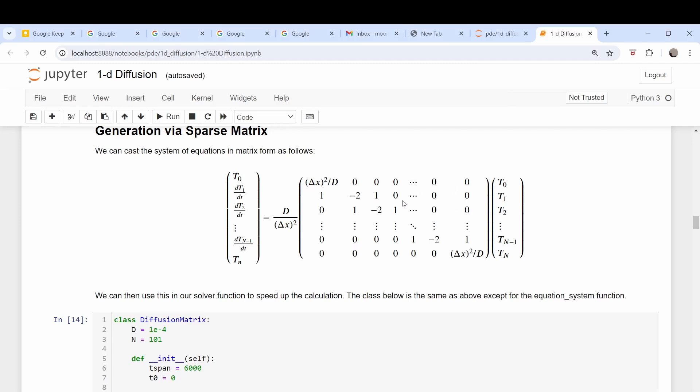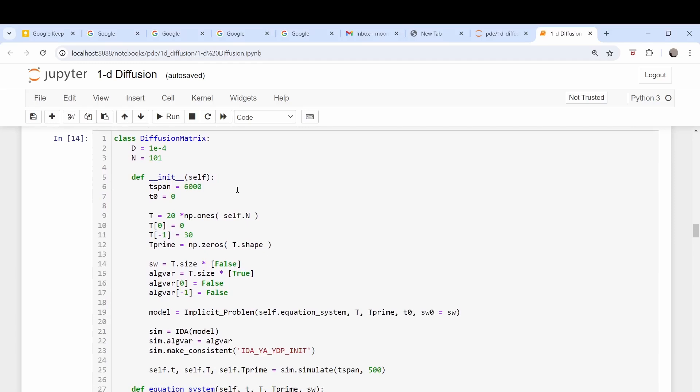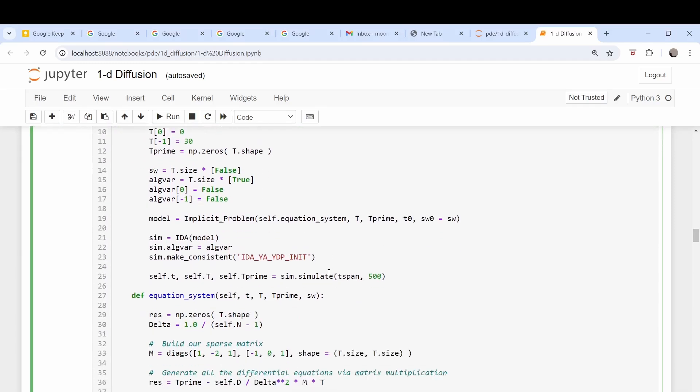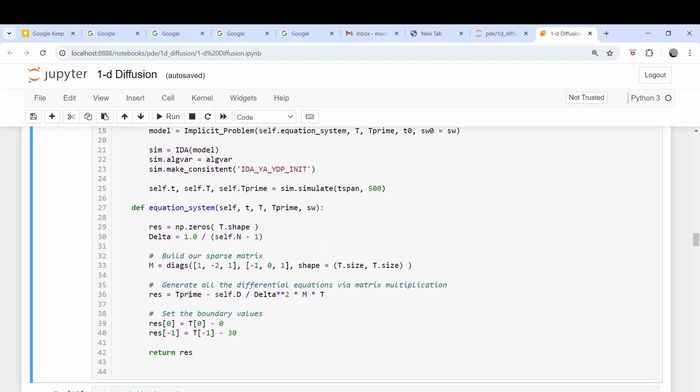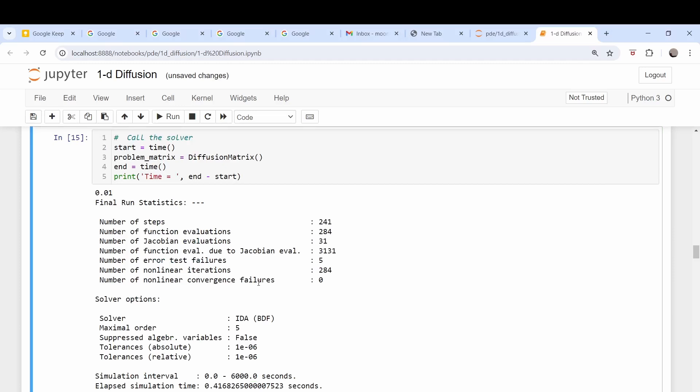So we came down here and we did the same thing. Here is the actual matrix equation, and here is where we define that sparse matrix. So this could even be done more efficiently since the solver calls this equation at every step and we're defining this matrix - we could define it outside and speed it up even more, but this is good enough for demonstration purposes.